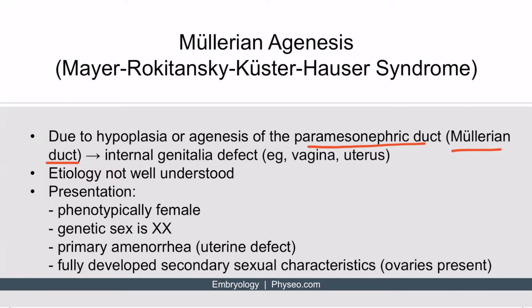The Müllerian duct is responsible for the development of the female internal genitalia. So it's logical that if this is defective, then the internal genitalia would also be defective, including the vagina and uterus. The exact reasoning behind why this occurs is not well understood.